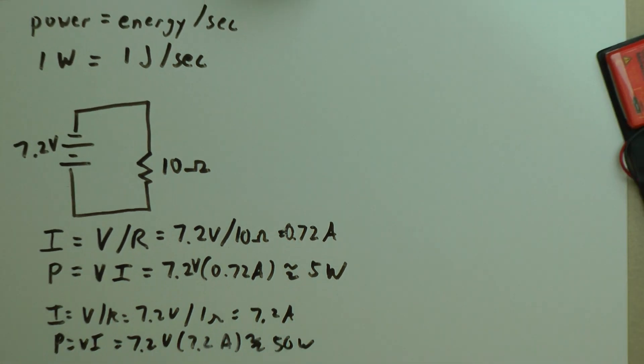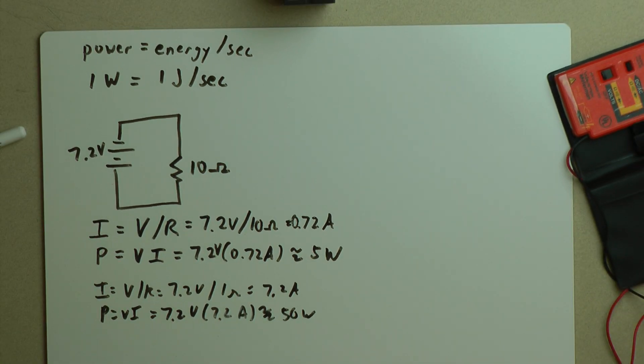So one of the things we want to do is always choose the size, both the ohmage, the resistance of our resistor, but also the size of the resistor. For example, let's look at one other thing here.